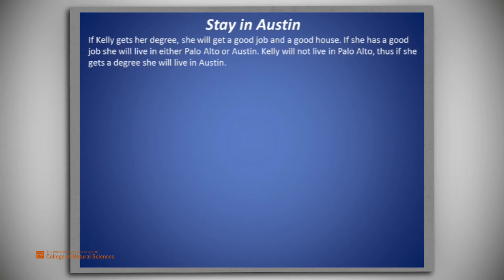If Kelly gets her degree, she will get a good job and a good house. If she has a good job, she will live in either Palo Alto or Austin. Kelly will not live in Palo Alto. Thus, if she gets a degree, she will live in Austin.